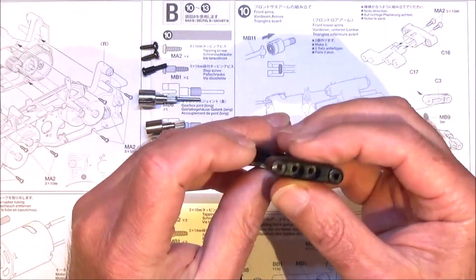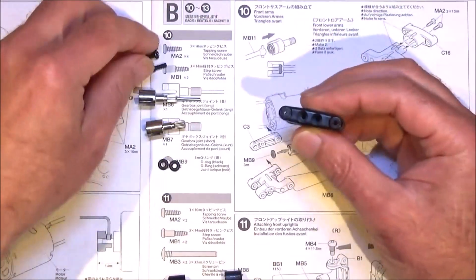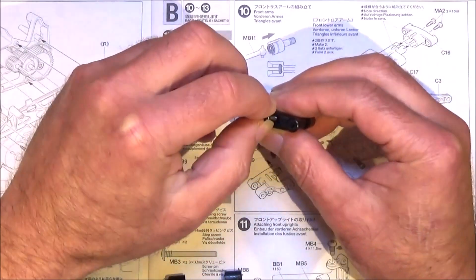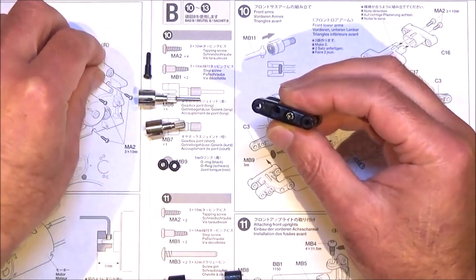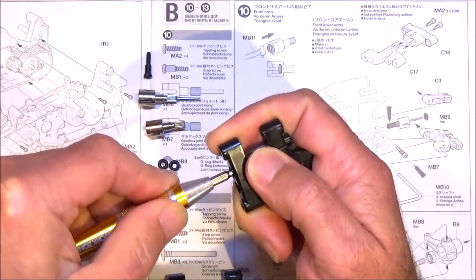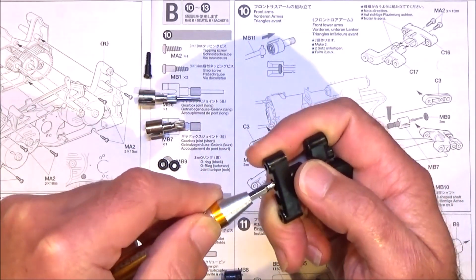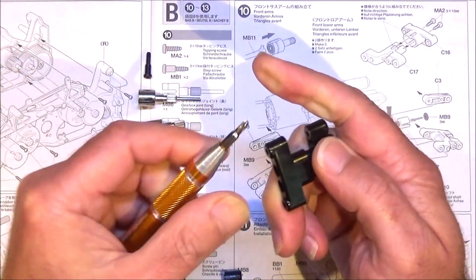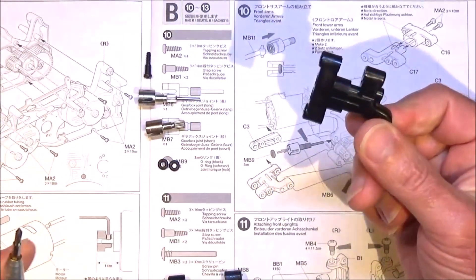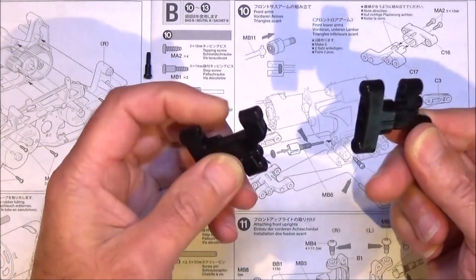Put those together and then fit them with your two 10mm screws. Don't go crazy over-tightening these because the plastic is quite soft. Just give them a good nip up but it's easy to strip the plastic, so don't get too mad.